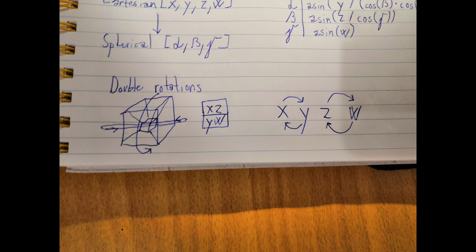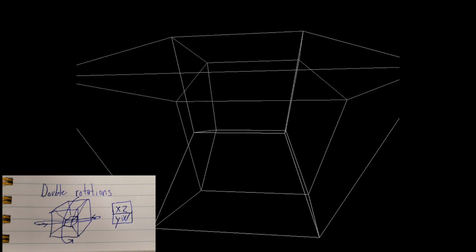One last thing I wanted to add are double rotations. In 4D, we have 4 coordinates. And as rotations happen in planes, we can do 2 rotations at once, while they are being independent from each other. Here's a demo showcasing it.